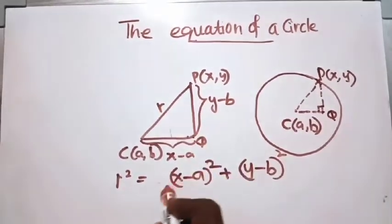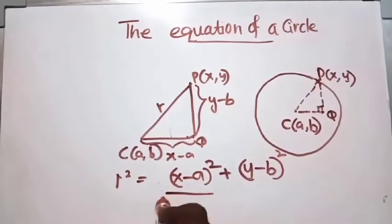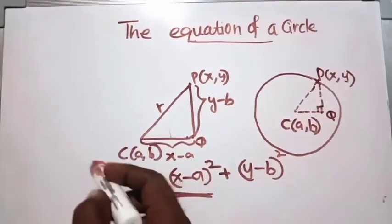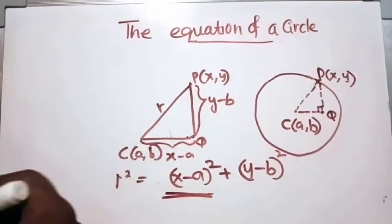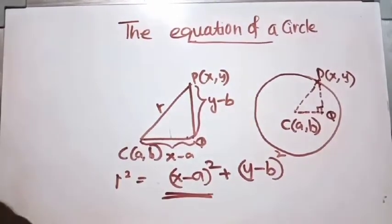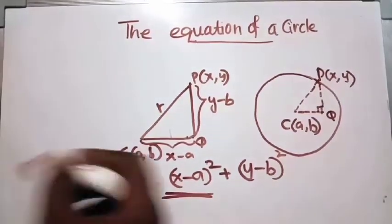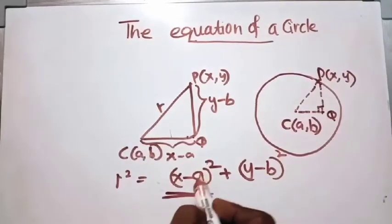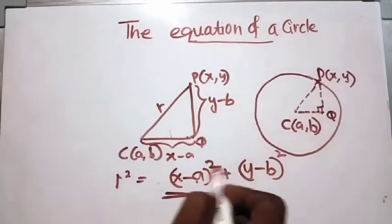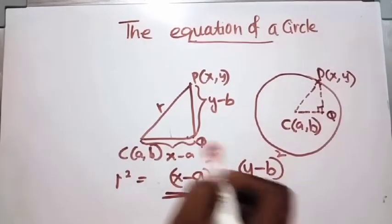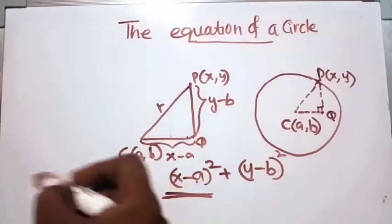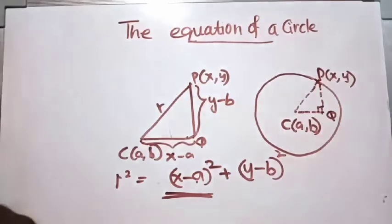This is considered as the equation of a circle, where (a, b) is the center of the circle and r is the radius.